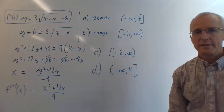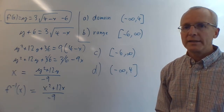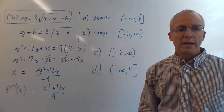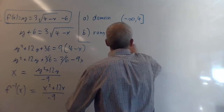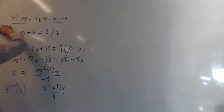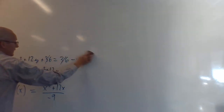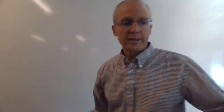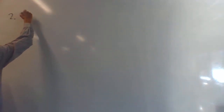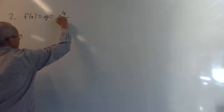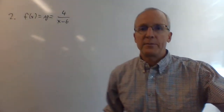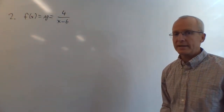Number two. For square roots the domain restricts us from taking negatives; for rational functions the issue is dividing by zero. Number two: f(x) = 4 / (x - 6). The domain can't include x = 6, since that would make the denominator zero. So the domain is all x except x = 6.